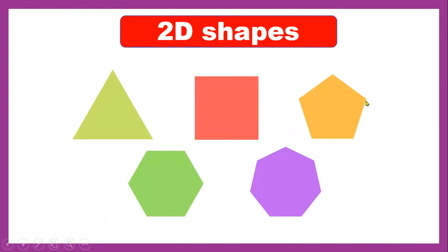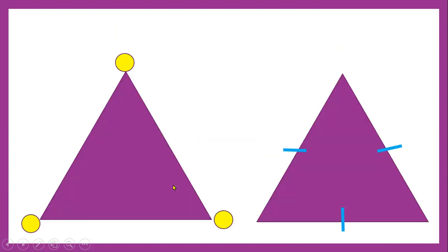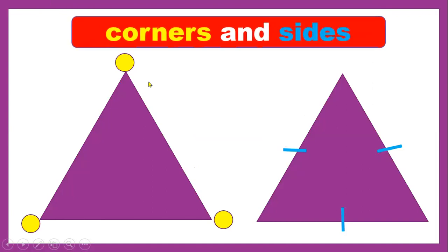This is a hexagon that has six sides. These yellow circles show corners and the blue lines on each side show sides. Three sides and three corners.